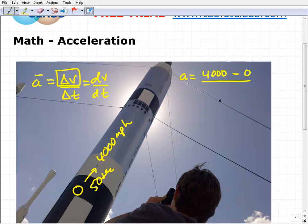Four thousand minus zero miles per hour. That's the difference in velocity, or Delta V. Now the difference in time is 50 seconds minus zero seconds, because it started from zero and went to 50. It went from zero to four thousand miles per hour.